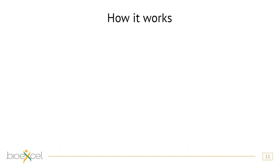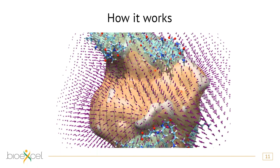We get a similarity gradient measure telling us how different the simulated and reference density are at each point in space, and how strong a change in density would be required to make them more similar. This is used to calculate forces acting on atoms. Note that densities are discrete with voxel spacing, so integrals are approximative. In multiple dimensions, this creates a gradient vector field to evaluate forces at each atom.